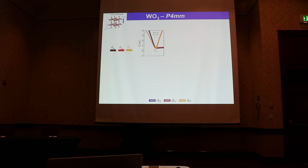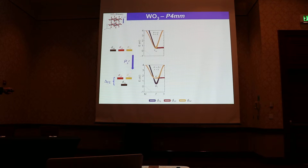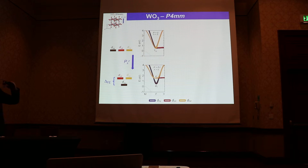We started from the cubic phase of WO3, focusing on the band structure at the bottom of the conduction bands, where the cubic structure has three degenerate T2G states. When a polar distortion is applied along the Z direction, the T2G level splits: a lowest DXY state appears, and the DYZ and DXZ levels split slightly above due to hybridization with oxygen. These are anti-bonding levels that move up, and the splitting is proportional to the ferroelectric distortion.